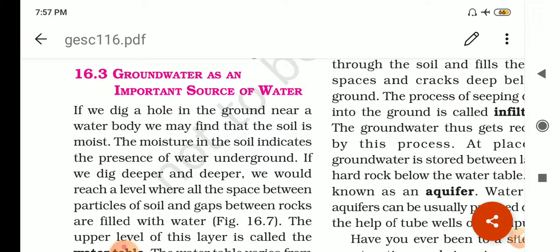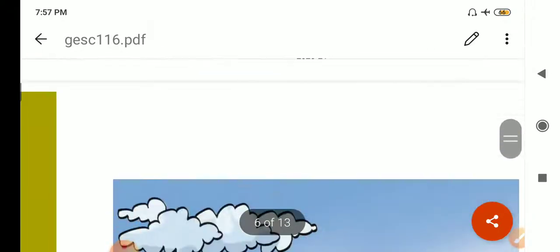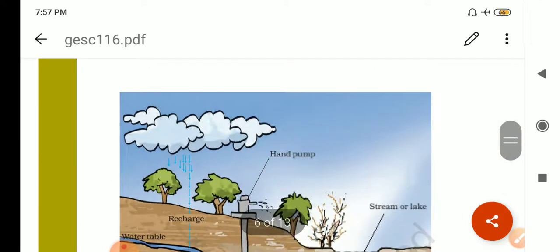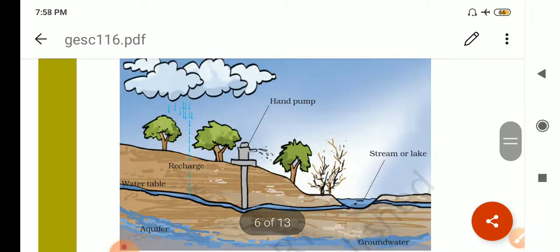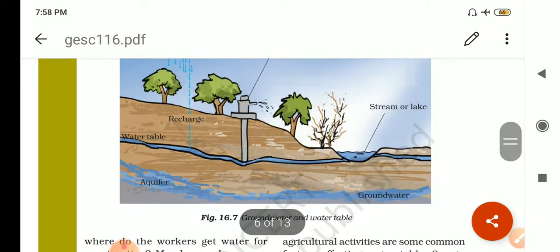Groundwater is an important source of water. Rainwater that penetrates through the soil gets collected over the rocky beds present underground. Now see this figure. The rain, through the soil, gets collected over the rocky bed present underground to form a reservoir. That is called the groundwater. And this all is called the groundwater.